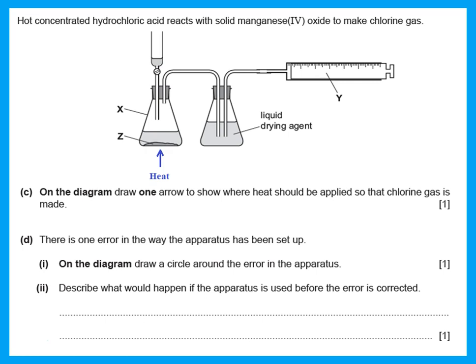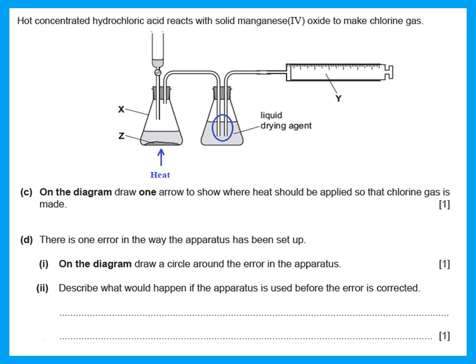We draw an arrow pointing upwards right at the reaction flask. Now on the diagram draw a circle around the error in the apparatus. Look at the second flask — the one in the middle. If I have delivery tubes going into a flask, one should be going into the liquid, but the other one should not be inside the liquid. The delivery tube going out to the gas syringe should be out of the liquid, not inside the liquid.